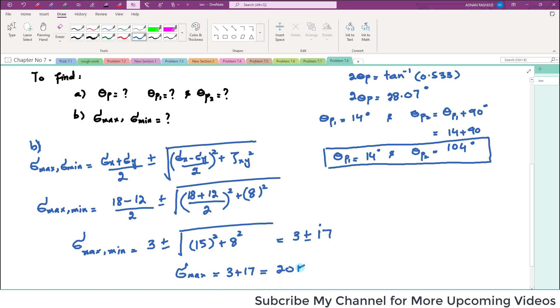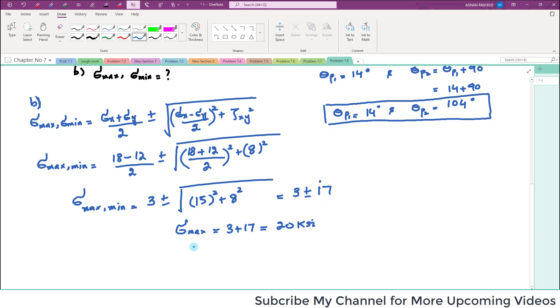So it means that sigma_max is equal to 3 plus 17, which is equal to 20 ksi. And sigma_min will be equal to 3 minus 17, which is equal to minus 14 ksi. So these are the principal stresses that are acting on the principal planes.